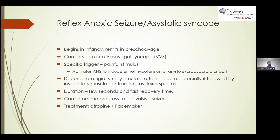Reflex anoxic seizures activate the autonomic nervous system to induce either hypotension, asystole, bradycardia, or both. Sometimes they are confusing because they can appear like a tonic-clonic seizure towards the end of the episode. Due to hypoxia, they can have dysregulatory movements that mimic seizures, usually of very brief duration with a fast recovery time.